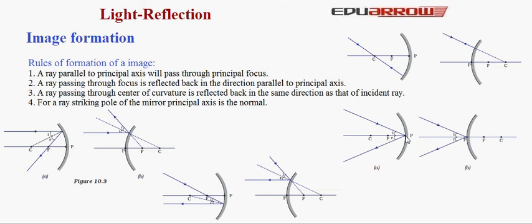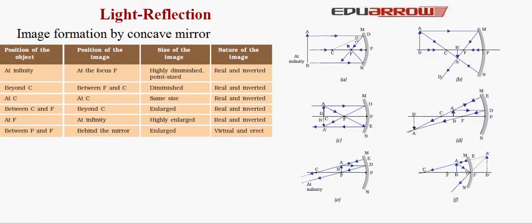Let us now discuss image formation by concave mirror. Firstly, what are real and virtual images? When light rays actually meet they form real images; when they appear to meet they form virtual images. When the object is at infinity, the image is formed at focus. The size of the image is highly diminished — point size. The nature of the image is real and inverted, as the light rays actually meet and the image direction is opposite to the object.